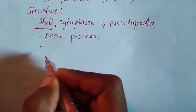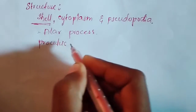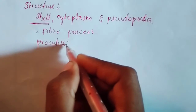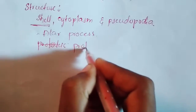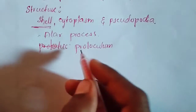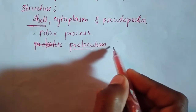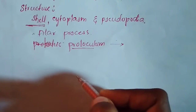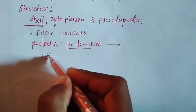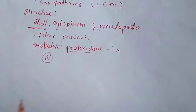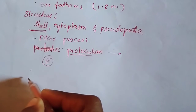The first-formed chamber responsible for the formation of the shell is called the proloculum. The proloculum is the initial chamber that helps in the formation of the entire shell. Usually, this shell is spiral in shape.